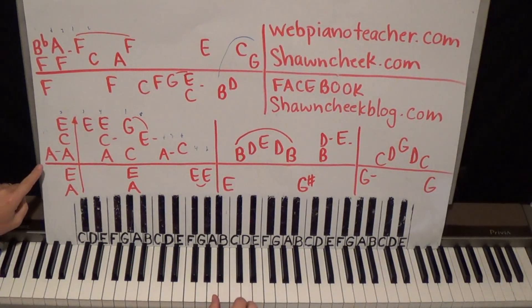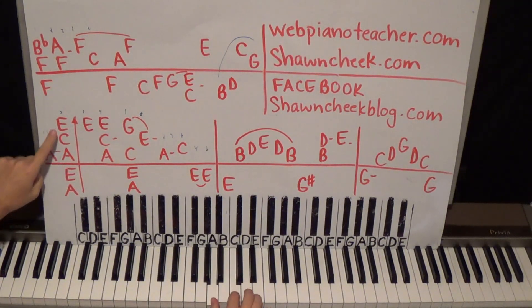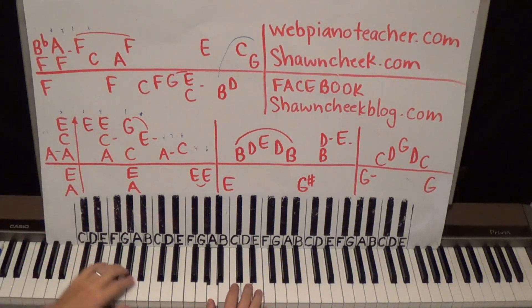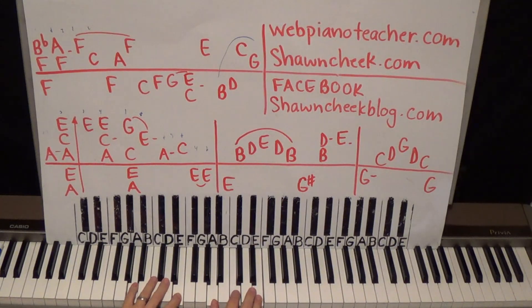Here we have an A below middle C, and then we have A C E with the left hand doing A E that we're going to roll because the guitar strums there. So it's one two three, we roll it up.